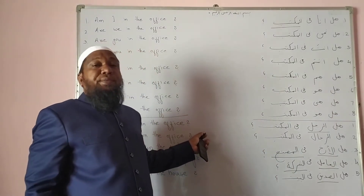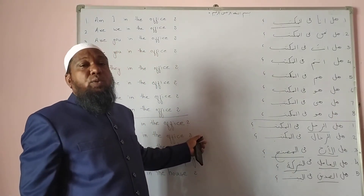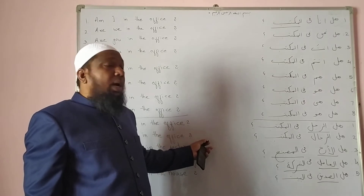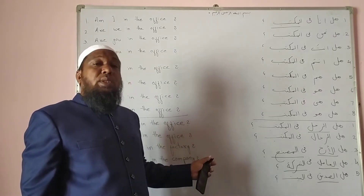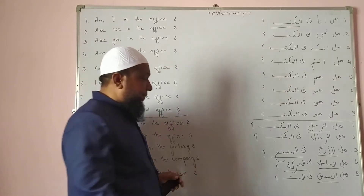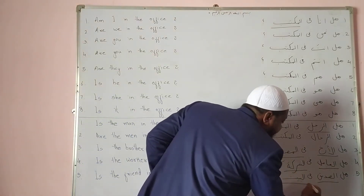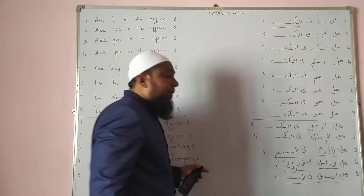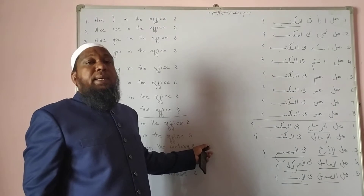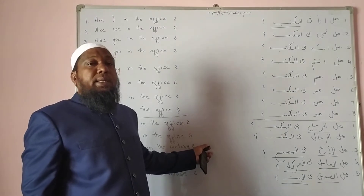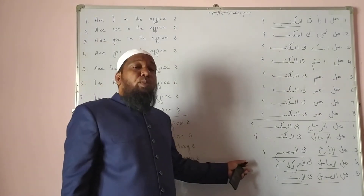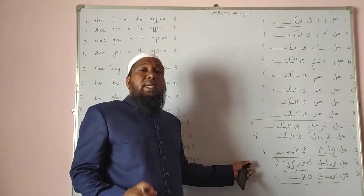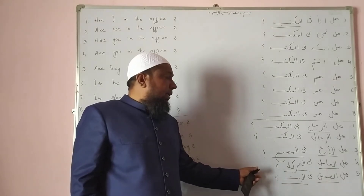Sadiq — Friend, Dost. Asdiqa — Friends, Dostan. Bayt — House, Ghar. Buyut — Houses, Ghara. So we have learned the singular and plural forms of these words.